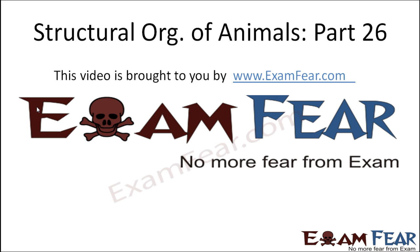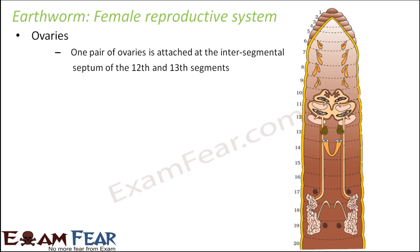This video on structural organization of animals part 26 is brought to you by examfear.com. Now, the female reproductive system: here you have ovaries — one pair of ovaries is attached at the intersegmental septum.